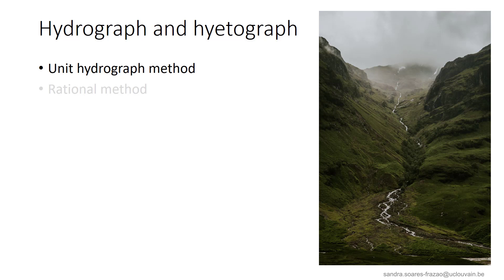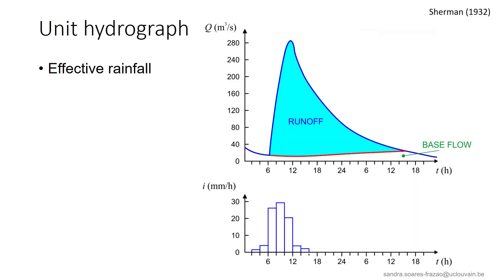In the case of large catchments, where rain falls over the catchment and discharges at the outlet can be measured, the unit hydrograph is the preferred method. The rational method, adapted to smaller areas where no measurements are available, will be discussed in the next lesson. The unit hydrograph method was developed by Sherman in 1932. It aims at producing the runoff hydrograph related to a given rainfall, but considering only the net or effective rain.